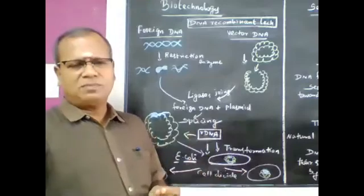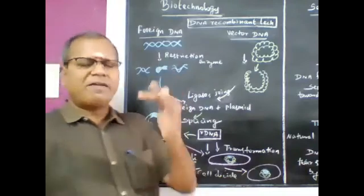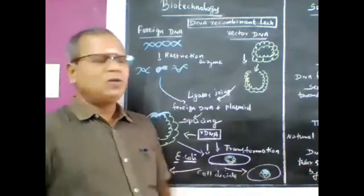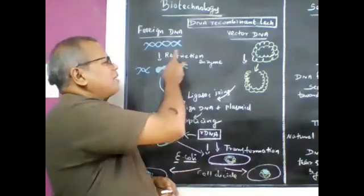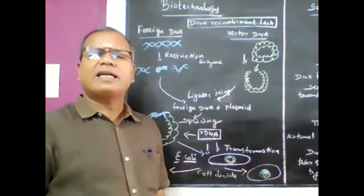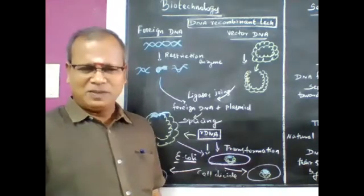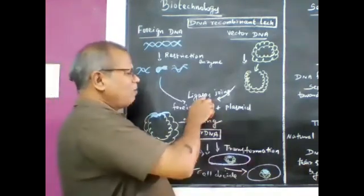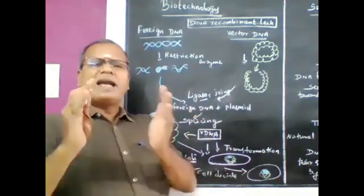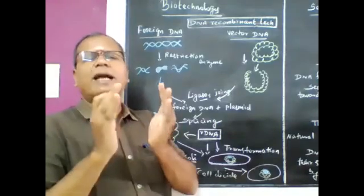The resultant organism is said to be a Genetically Modified Organism — GMO. This is the definition. Basic tools: restriction enzyme, or restriction endonuclease, acts as a molecular scissor. DNA ligase acts as a paste. These are the basic tools of DNA Recombinant Technology.